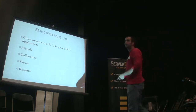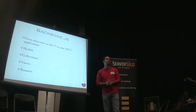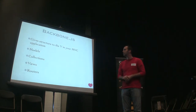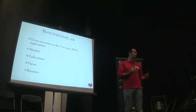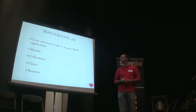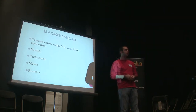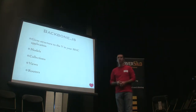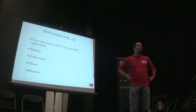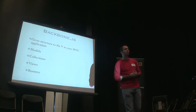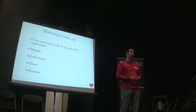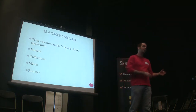Backbone.js gives structure to the V in your MVC application — I like to say it's MVC all the way down. It's made up of four main components: Models, which are basically data stores that manage persistence and some logic; Collections, which are groups of models with easy ways to work with them; Views, which represent what things look like and handle events from the view; and Routers, which maintain web standards so when you refresh the page you're still in that same place, and when you hit the back button it takes you back.